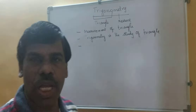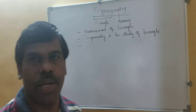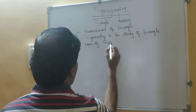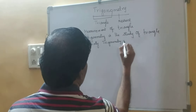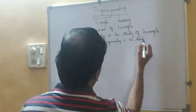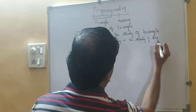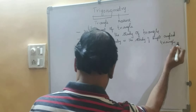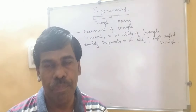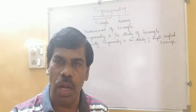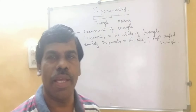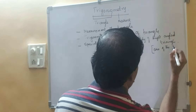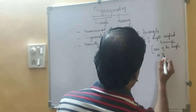More especially, trigonometry is the study of the right triangle. A right triangle is a triangle whose one angle is 90 degrees.